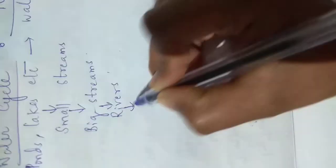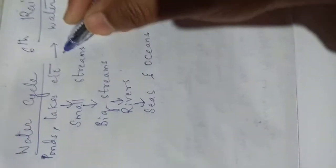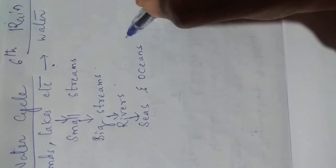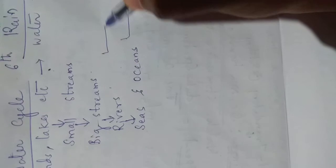And rivers mein jo paani hai, that will enter into seas and oceans. Like this, from smaller water bodies, water will be entering into bigger water bodies. And all the water bodies on the earth will be completely filled with water.